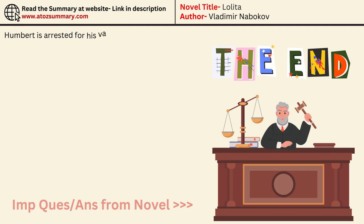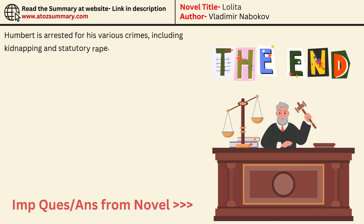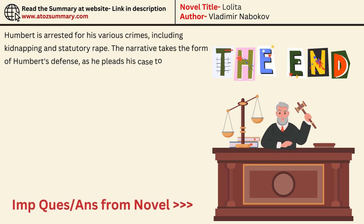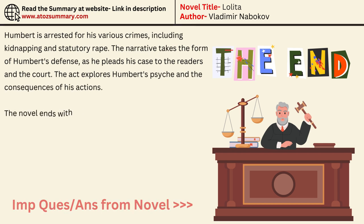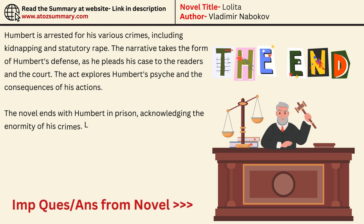Humbert is arrested for his various crimes, including kidnapping and statutory rape. The narrative takes the form of Humbert's defense, as he pleads his case to the readers and the court. The act explores Humbert's psyche and the consequences of his actions. The novel ends with Humbert in prison, acknowledging the enormity of his crimes.